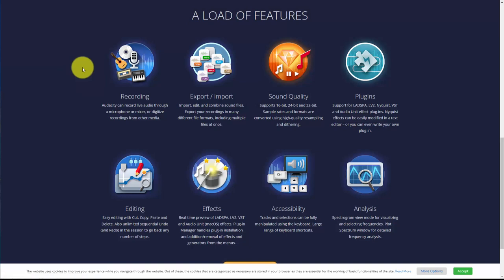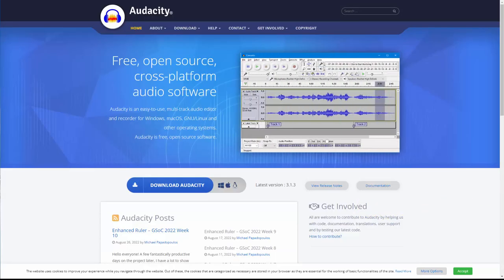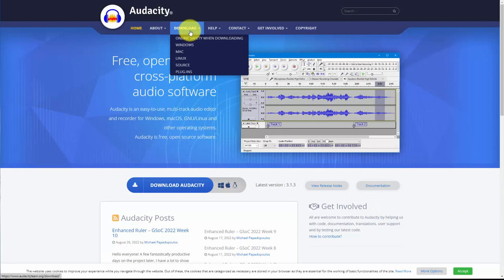According to Audacity, what you can do is record with it. You can import and export files. You can determine the sound quality of the audio file that you're creating. Audacity has plugins for specialty creation. You'll be able to use Audacity for editing, as well as effects, accessibility, and analysis. To start the process, you'll go to your system and download Audacity to your hard drive.